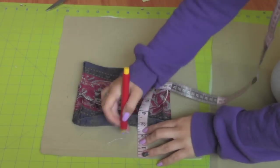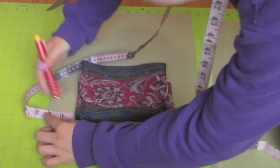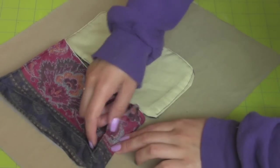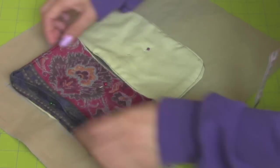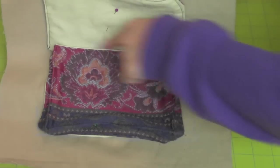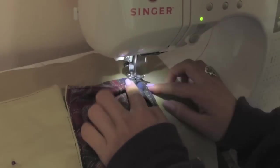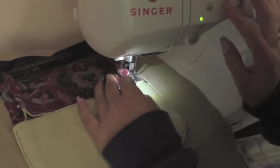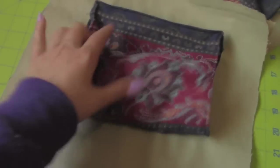Place the pocket 2 inches from the bottom and 2 inches from the side on the exterior piece. Fold in the sides and the bottom and sew. Sew the flap right above the pocket. This is how it should look like.